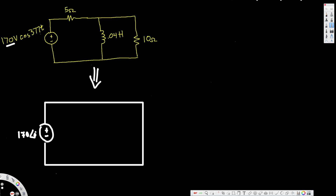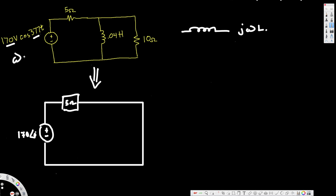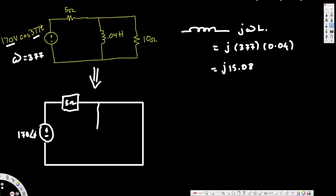So we are going to have 170 at zero degrees. All of the resistors, inductance, and resistors are going to become impedances when we convert into phasor domain. The resistor is going to remain the same — it is still going to be 5 ohms. When we convert the inductance from time domain to phasor domain, that becomes j·omega·L. In our case omega equals 377, and the inductance is 0.04, so j times 377 times 0.04 gives us j15.08.